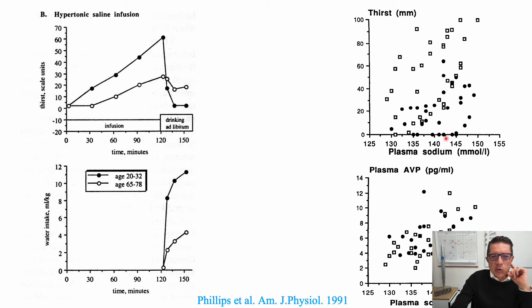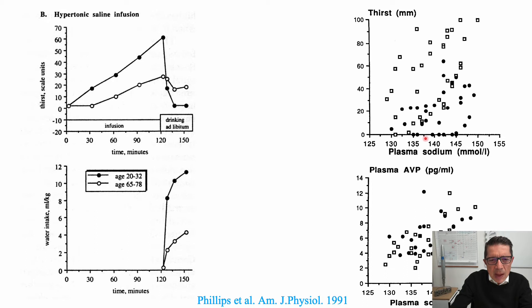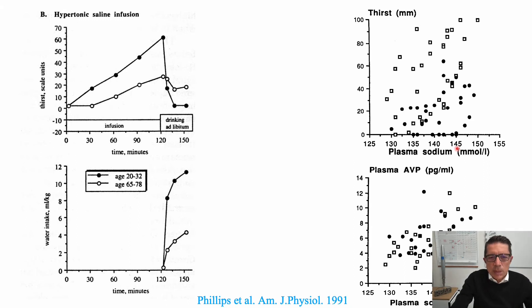Looking at plasma osmolality versus thirst, the white data are for younger adults and the black data for older adults. For any given plasma osmolality — with plasma sodium being the main contributor to osmolality — you see significantly higher thirst for younger people versus the older people. This indicates that for any given plasma sodium or osmolality level, the thirst sensation is substantially lower in older adults.